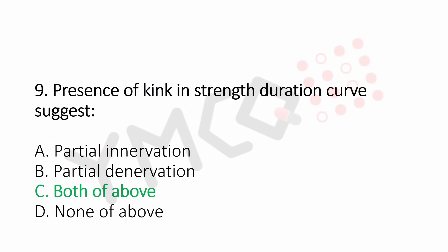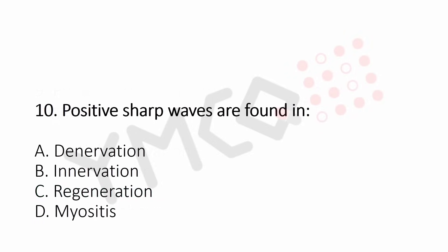Question 10: Positive sharp waves are formed in — Option A: de-innervation, Option B: innervation, Option C: regeneration, Option D: myositis. The answer is Option A: de-innervation.